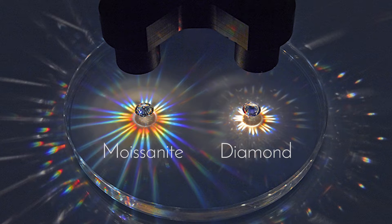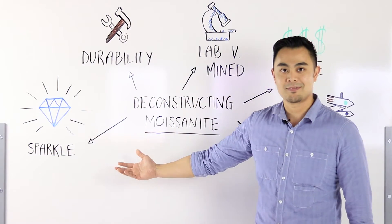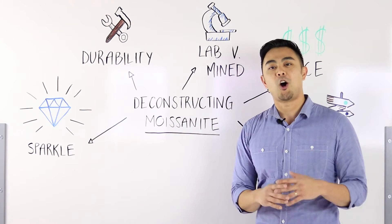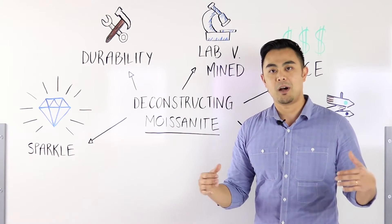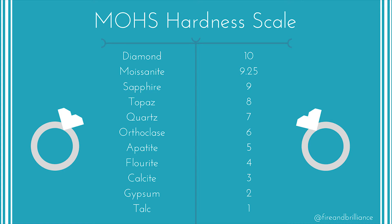Point number two: durability or hardness. The hardness of a gem is measured by what is called the Mohs scale. In the Mohs scale, the diamond beats moissanite when it comes to the actual hardness of the gem. A diamond has a Mohs scale of 10, while a moissanite has a Mohs scale of 9.25.